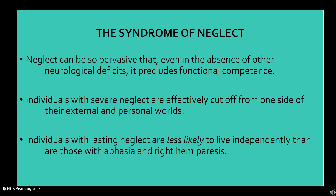Neglect can be so pervasive that even in the absence of other neurological deficits, it precludes functional competence. Individuals with severe neglect are effectively cut off from one side of their external and personal worlds, which is devastating. Individuals with lasting neglect are less likely to live independently than those with aphasia or right hemiparesis. And as PTs will tell you, individuals with right CVAs and neglect are more difficult to rehabilitate than those with left hemisphere strokes, who rarely show neglect.